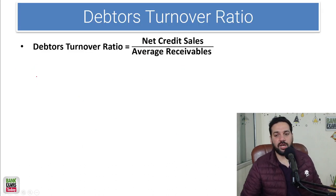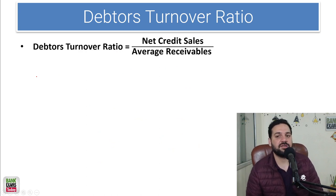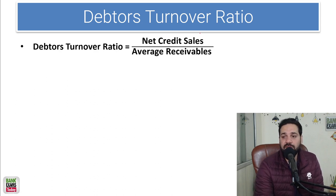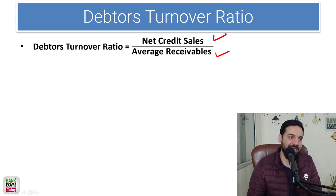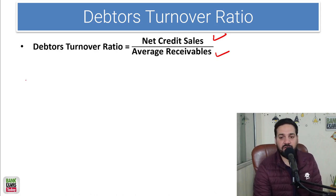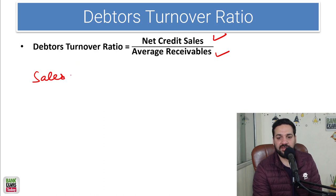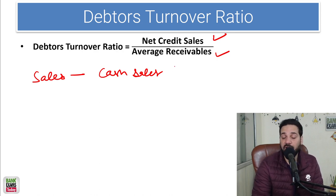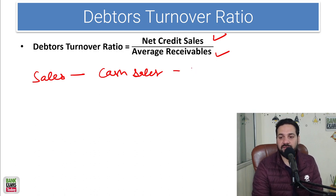What is the debtor turnover ratio? I hope you know what debtors are — they are the people from whom we have to collect money. The debtor turnover ratio is equal to net credit sales divided by average receivables. Net credit sales is your total sales minus cash sales — because cash sales are not credit sales — minus sales returns.